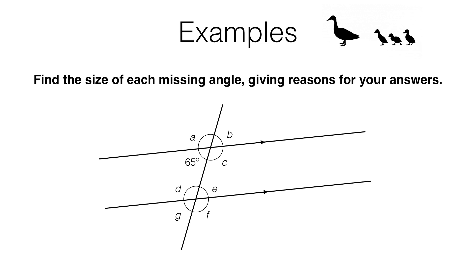The second fact you should be comfortable with is that angles on a straight line add up to 180 degrees. For example, here we've got a straight line and you should be comfortable that these angles add up to 180 degrees, so A plus B would be 180.